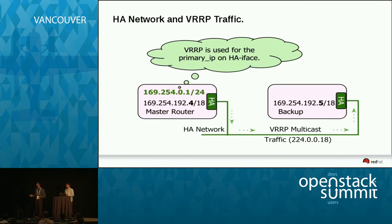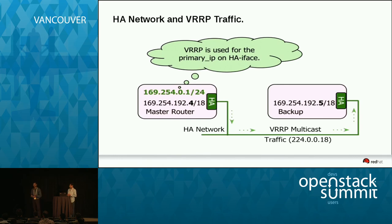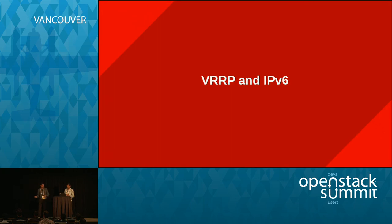This section shows how HA traffic is exchanged between the various L3 agents. An HA network is created for each tenant in a particular subnet. The reason an HA network is created is to isolate the keepalived VRRP traffic so that it doesn't flood or use the tenant network. The master router will have this IP address.